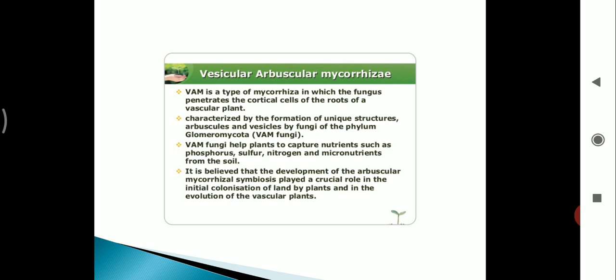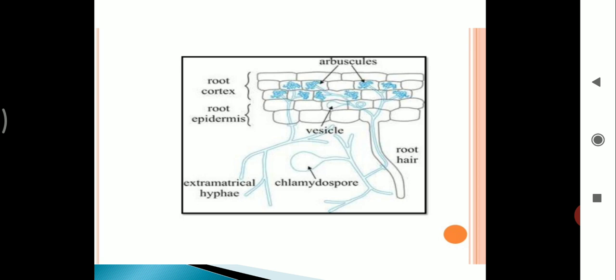The vesicle is spherical or oval in shape. It is a thick-walled structure produced at the tip of hyphae in the intracellular space or intercellular space. It is rich in fat droplets and hence serves as the storage organ. This is the structure of VAM fungi. It contains three important structures: external hyphae, arbuscule, and vesicle structure.